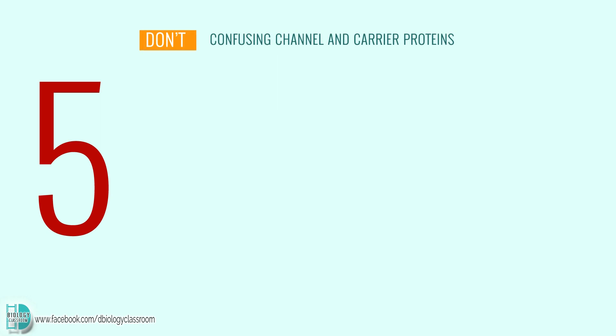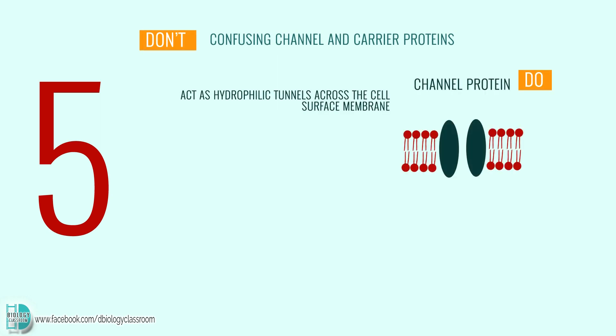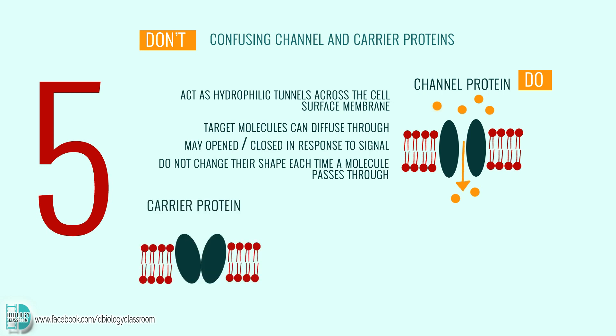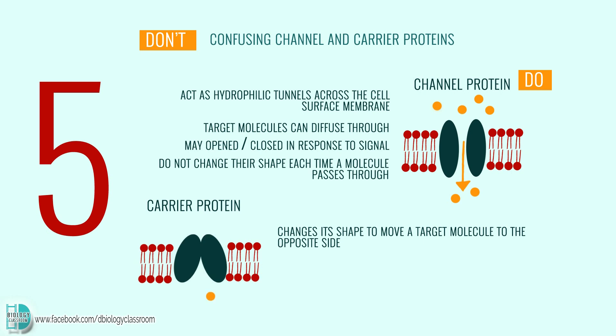Number 5: confusing channel and carrier proteins. Channel proteins act as hydrophilic tunnels across the cell's surface membrane, allowing their target molecules to pass through by diffusion. Some of them may be open or closed in response to a particular signal, but they do not change their shape each time a molecule passes through. Carrier proteins change their shape to move a target molecule from one side of the membrane to the other. As a target molecule binds to it, it changes its configuration to move the molecule to the opposite side.